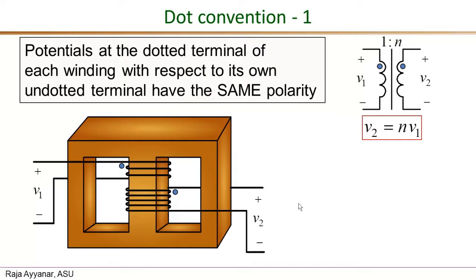As a quick recap, we learned about dot conventions. Rule number one says that the potential at the dotted end of all the windings with respect to their own undotted end — if that is positive in the first winding, then the voltage at the dotted end of the second winding with respect to its own undotted end will also be positive.